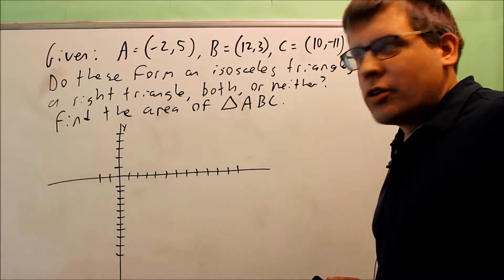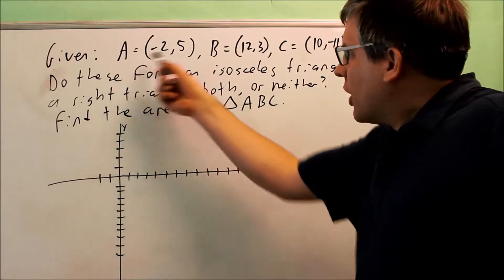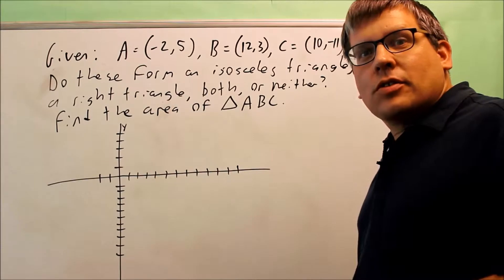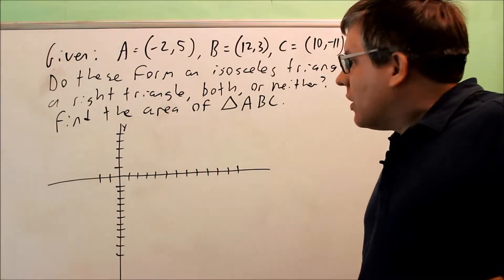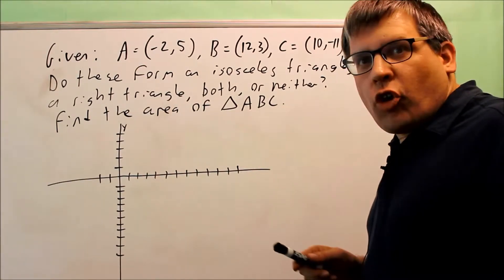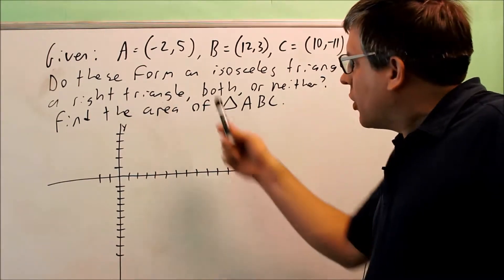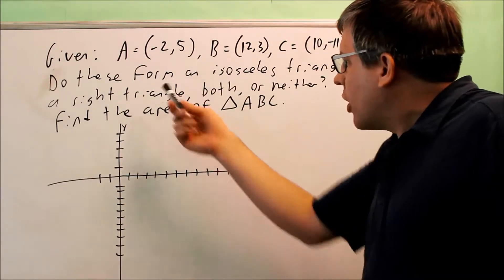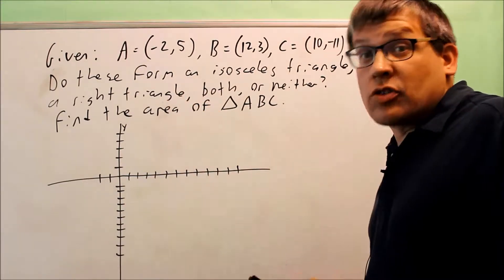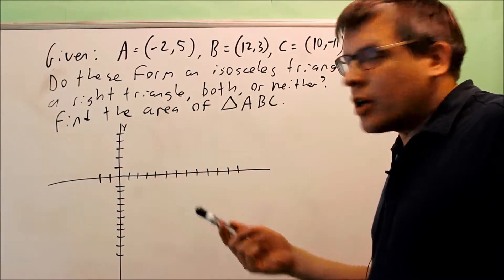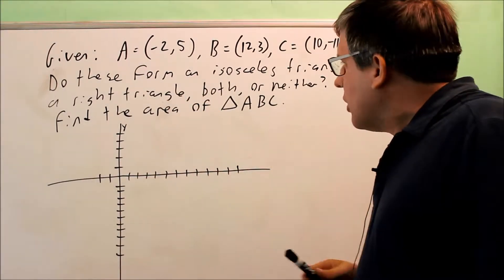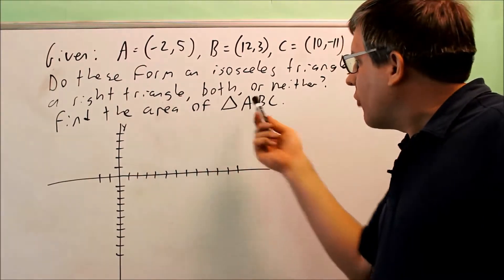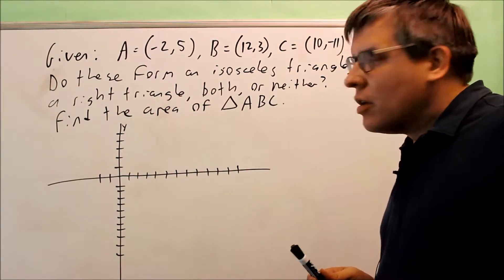This problem is a little bit longer. We're given three points A, B, and C, and they're going to form a triangle. We want to tell if it's isosceles, a right triangle, if it's both — so an isosceles right triangle — or if it's not any of those. We also want to find the area of triangle ABC.